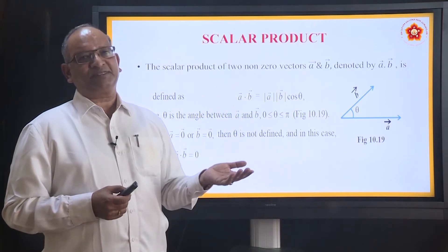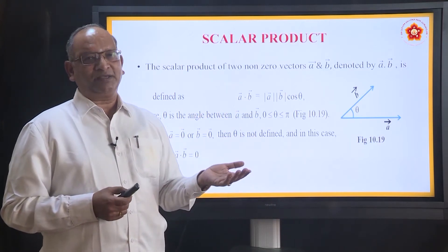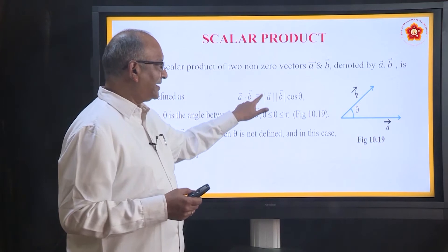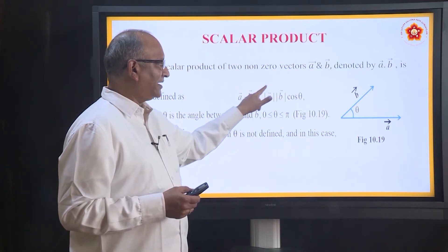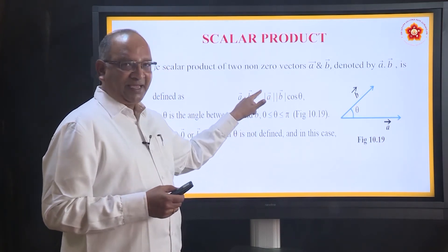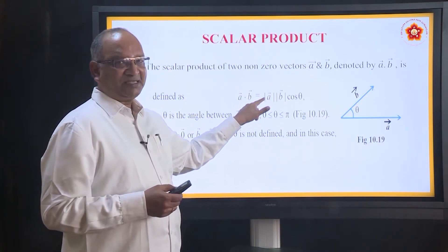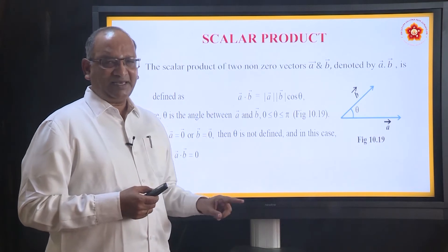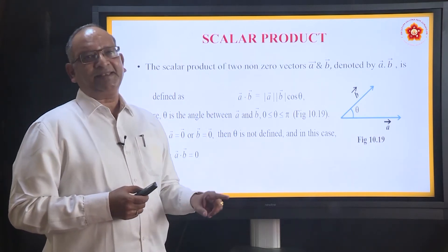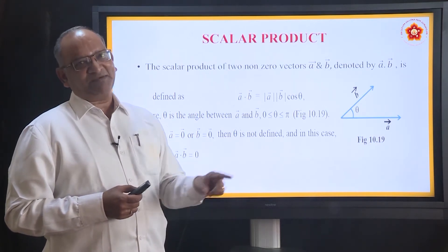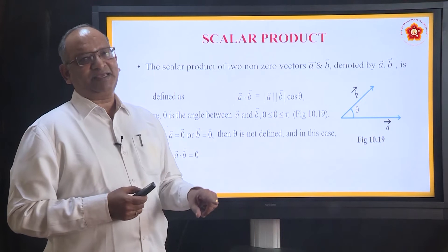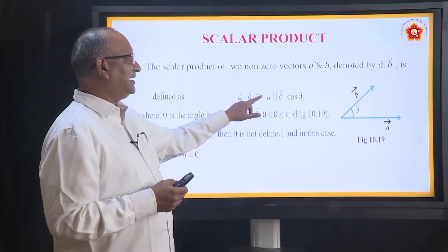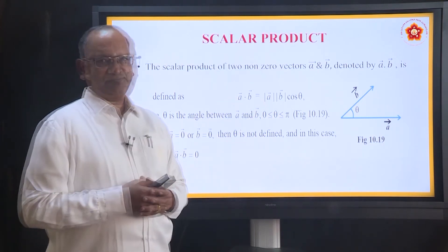So if you are taking the product of A and B, it is defined as AB cos theta — not vector AB. It is scalar A, scalar B, and then cos theta. We know cos theta is also a scalar quantity. So what is happening in the process? You are getting a scalar quantity. Modulus of A is a scalar, modulus of B is a scalar, cos theta is also a scalar. So product of scalars is a scalar — hence we say it is a scalar product.